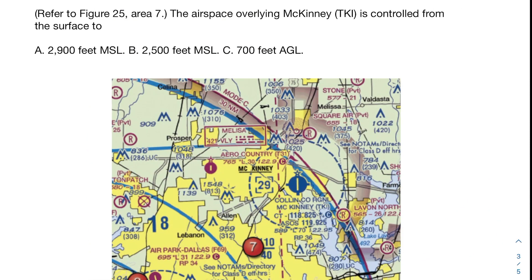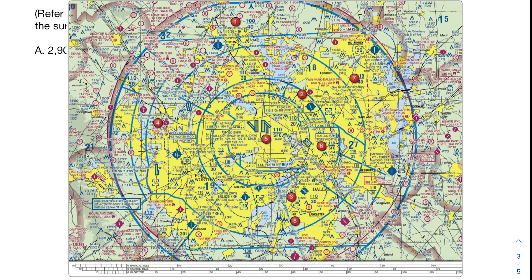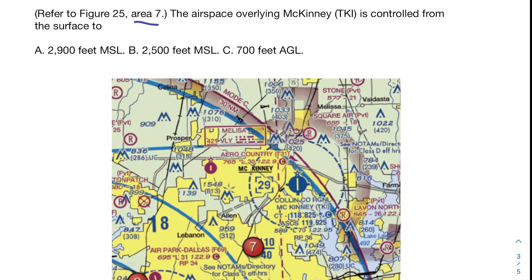Let's go ahead and look at another problem. Take a little bit of time to read over the problem yourself, look at the answers and the chart, and see if you can come to the answer on your own. The airspace overlying McKinney is controlled from the surface to what? The original figure is massive, but thankfully they tell us which area to look at — just zoom in on area seven. TKI is the airport letters. So we zoomed in on area seven — here's what that looks like. What airspace would you say this is, and how can you tell?